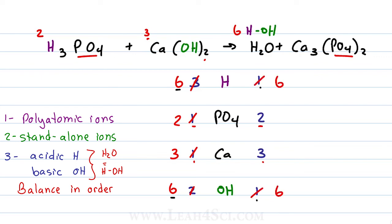Phosphate is balanced, calcium is balanced. The only thing left unbalanced is that I have 6 acidic protons and 6 hydroxides in the reactants but just 1 and 1 in the products. With a 1-to-6 ratio, just multiply by 6. Placing a 6 in front of water gives me 6 HOH molecules in the products: 6 protons, 6 hydroxides. And look at that — 6 hydrogen, 2 phosphate, 3 calcium, 6 hydroxide — everything is balanced!